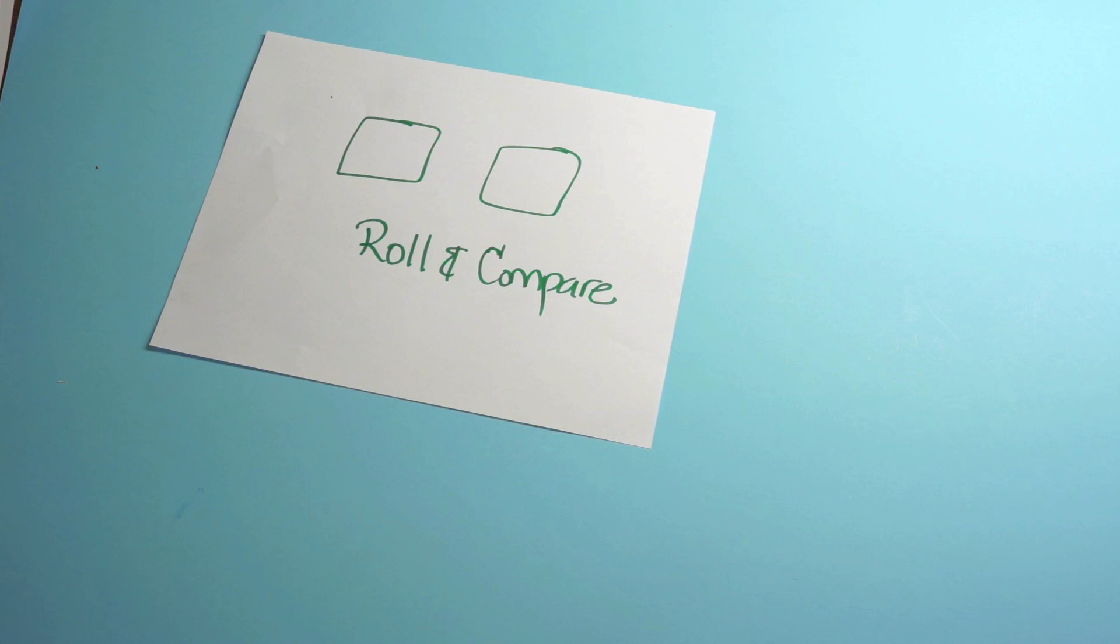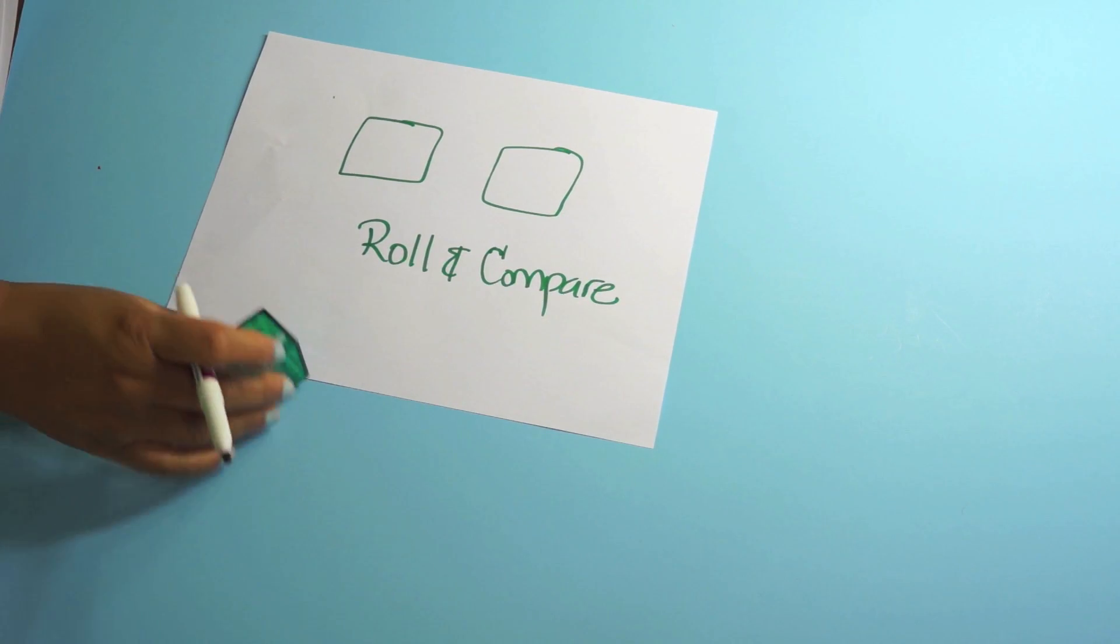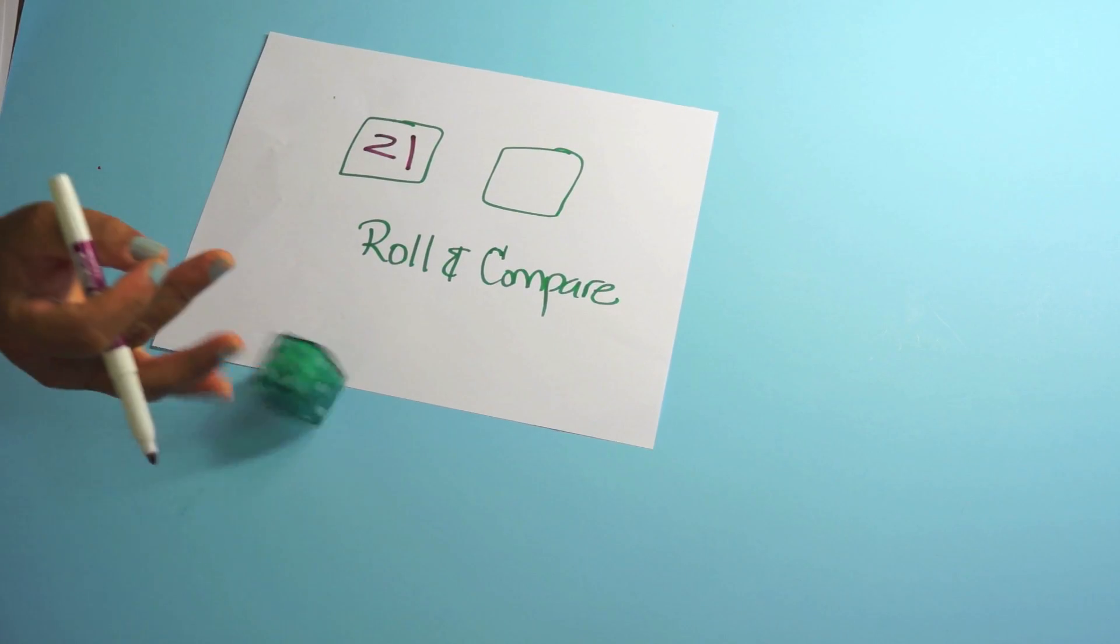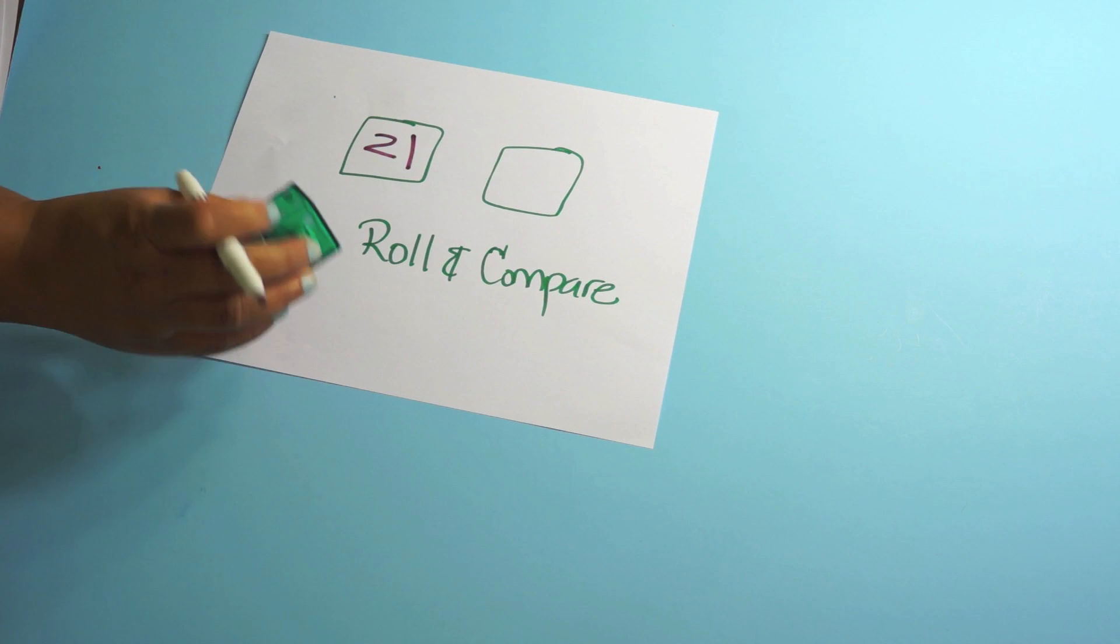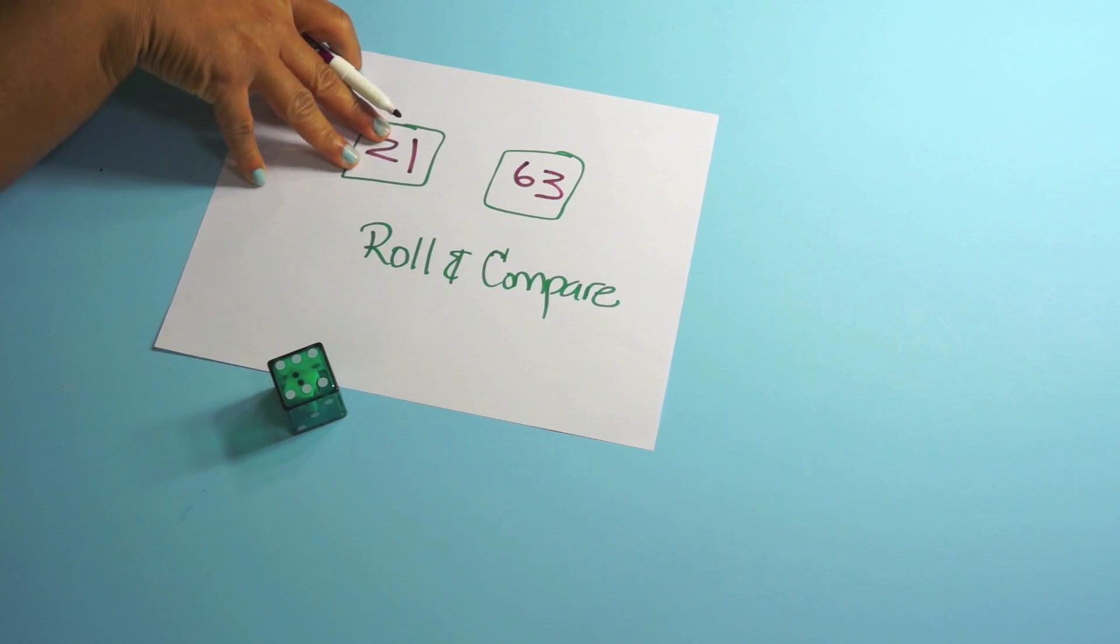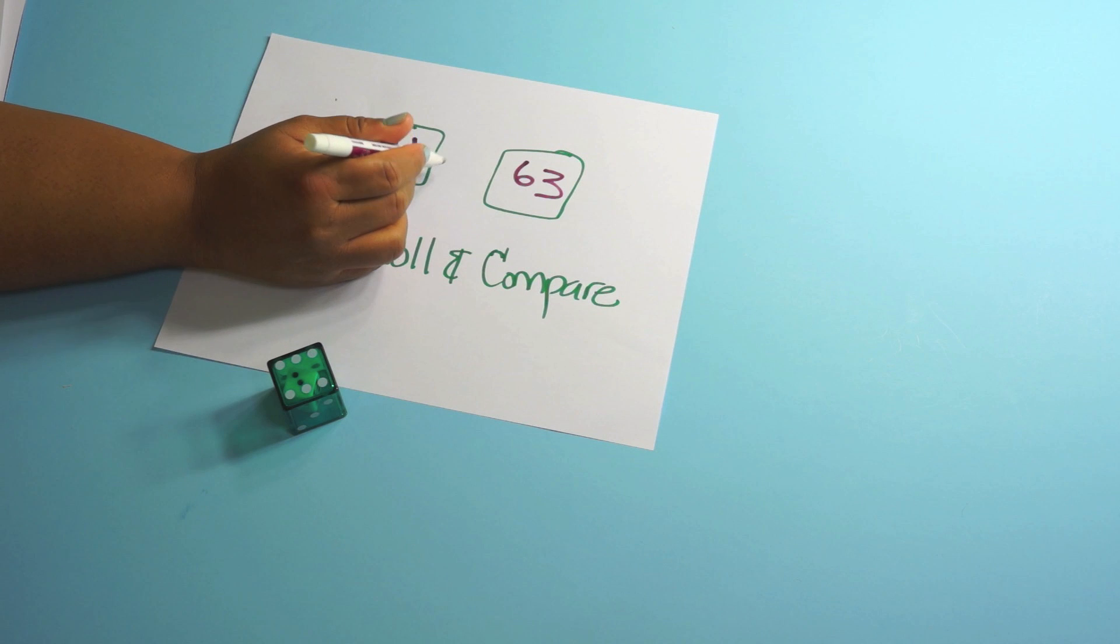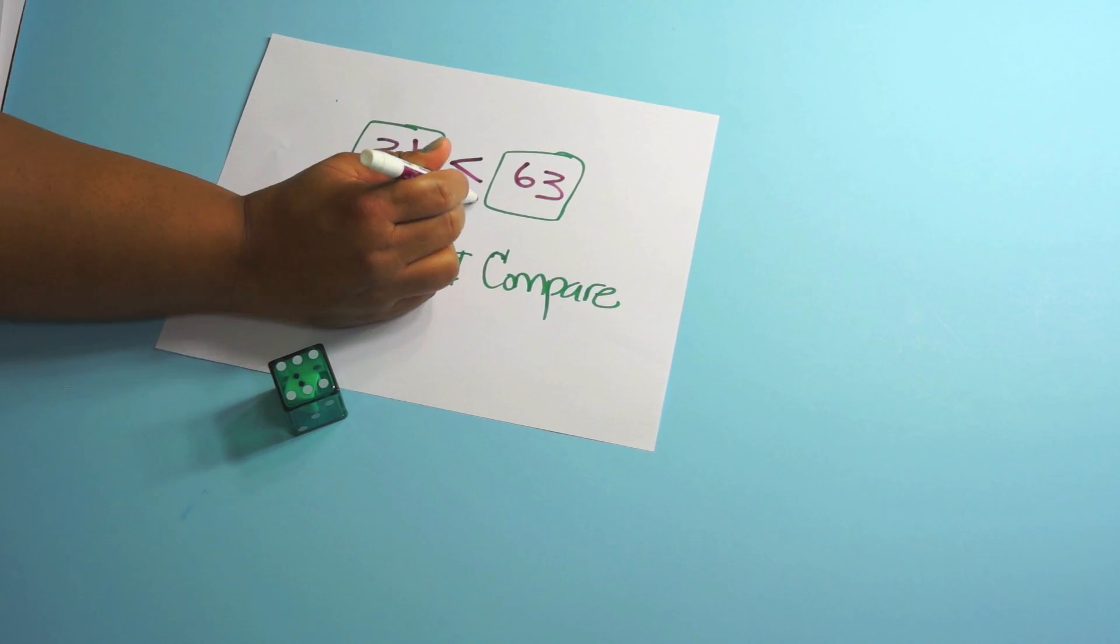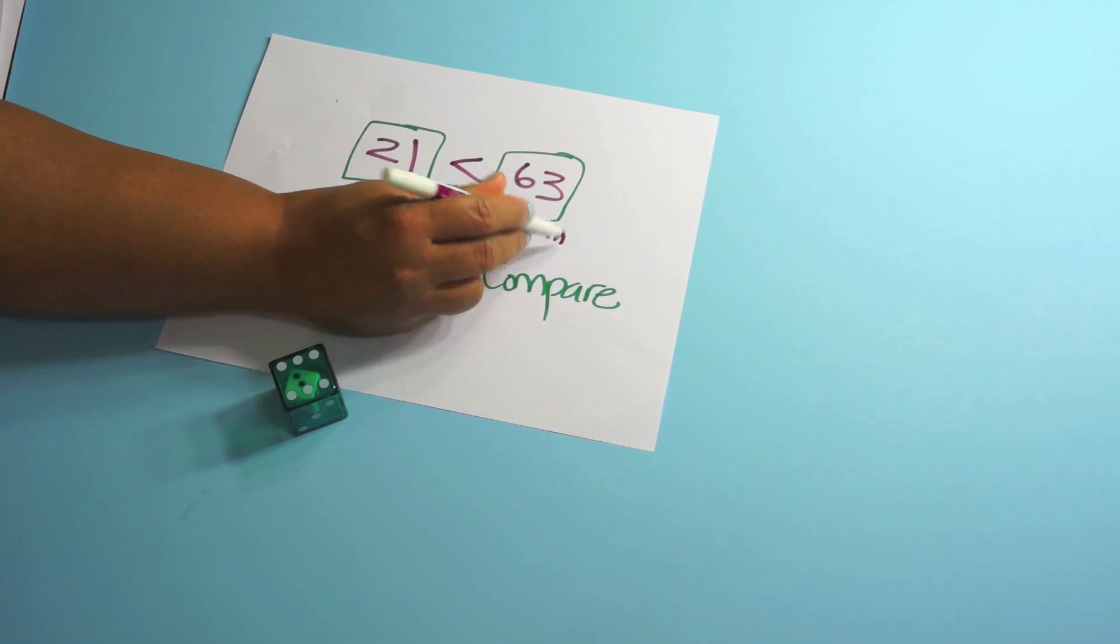They also have to be able to compare numbers. So I have the kids roll the die. They can do it by themselves or with a partner. Inside number is ones, outside number is tens. And then they roll again. And this was 63. And then they have to compare. 21 is less than 63.